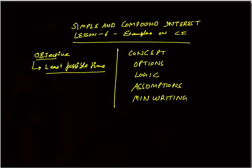These five things are important: concept, options, logic, assumptions, and minimum writing. Using one or more of those you can solve any question.